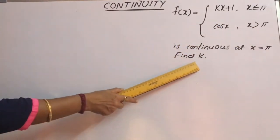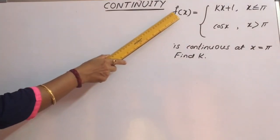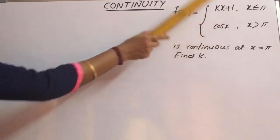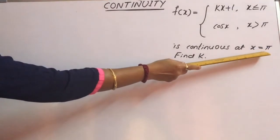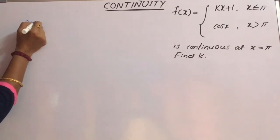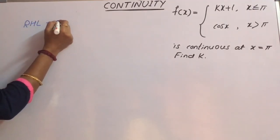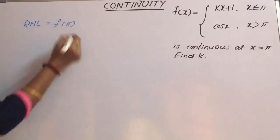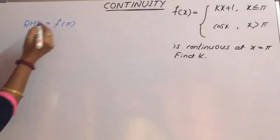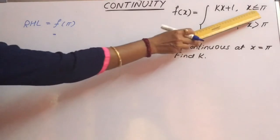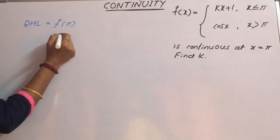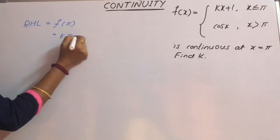To find the value of k, since the function f(x) is continuous, the left-hand limit (LHL), right-hand limit (RHL), and function value at the given point x = π must all be equal. The function value at x = π uses the definition kx + 1, so f(π) = kπ + 1.